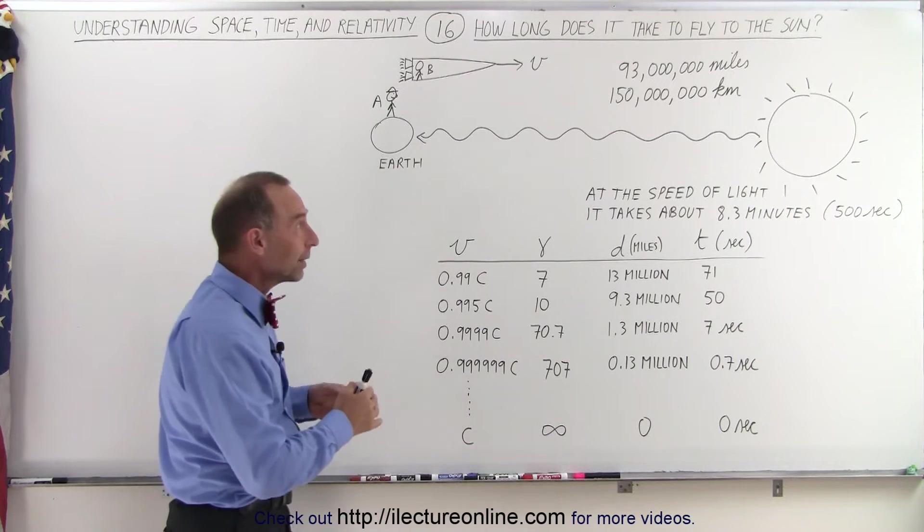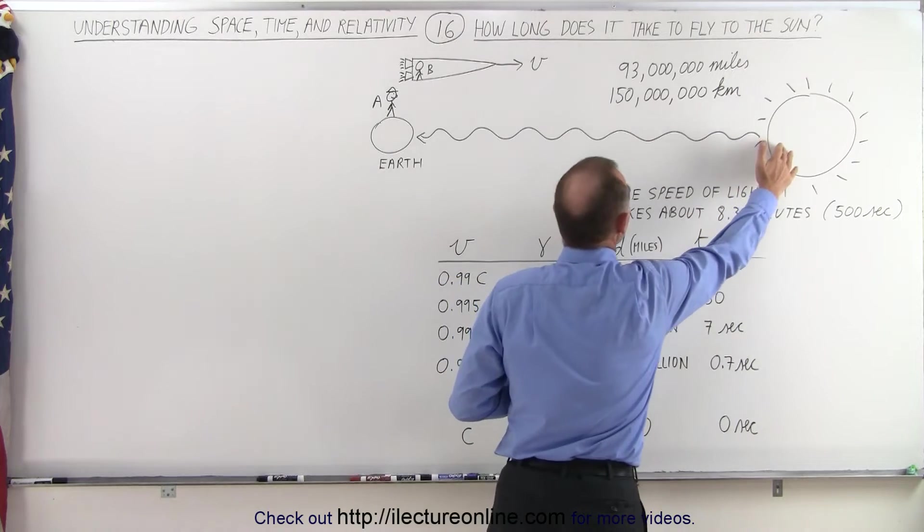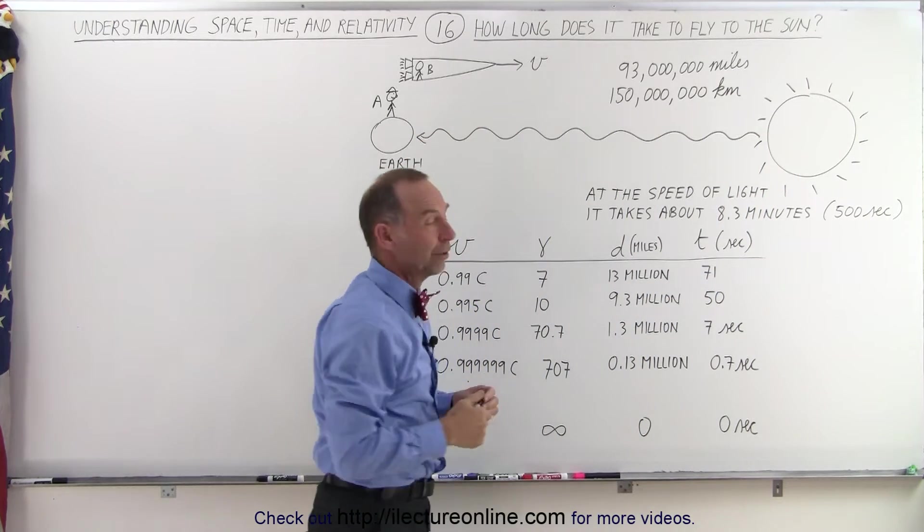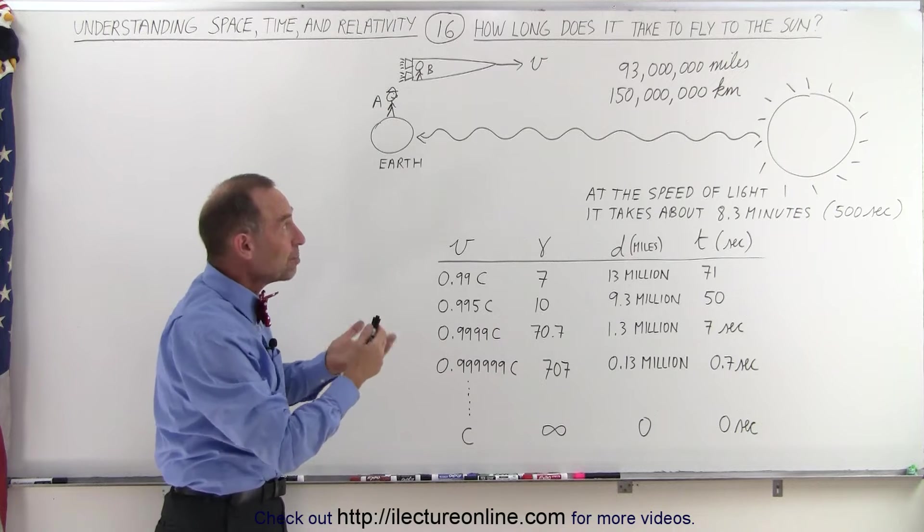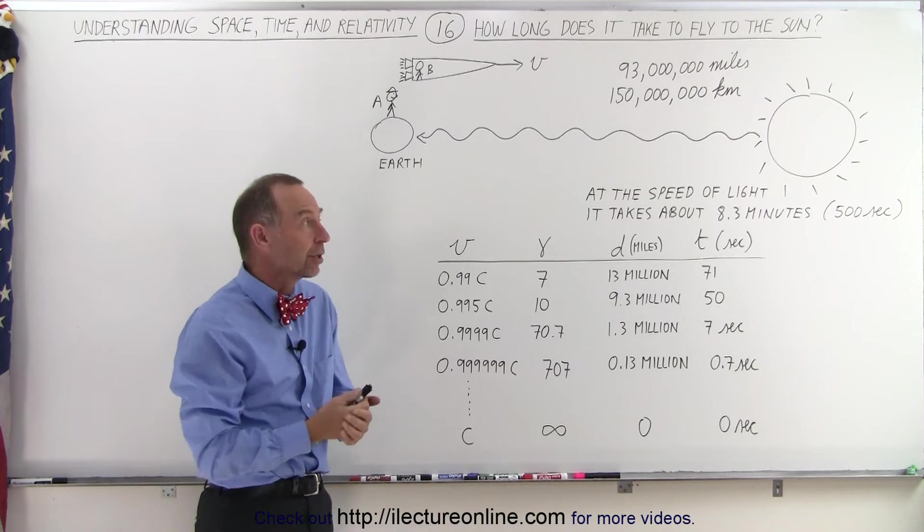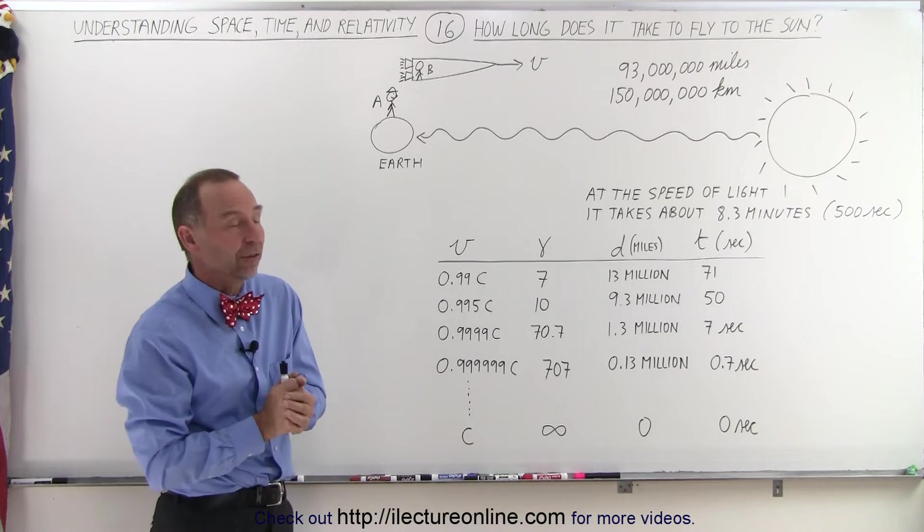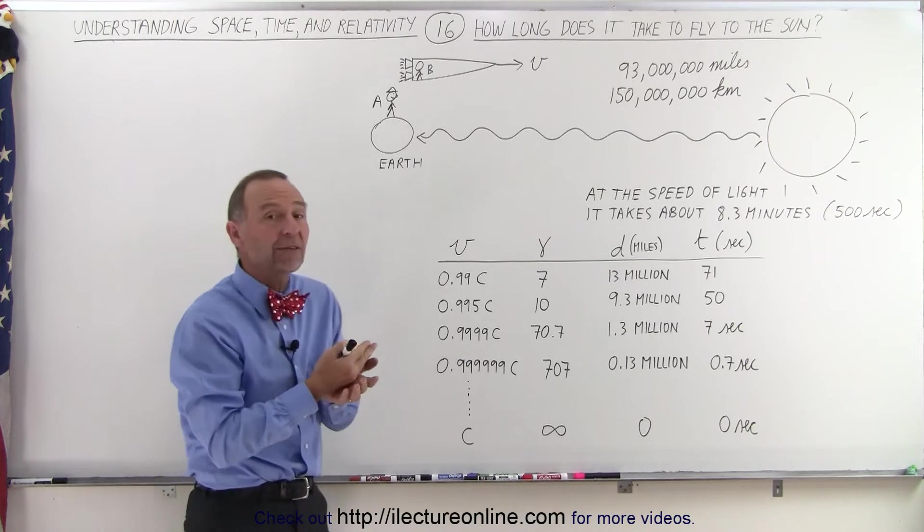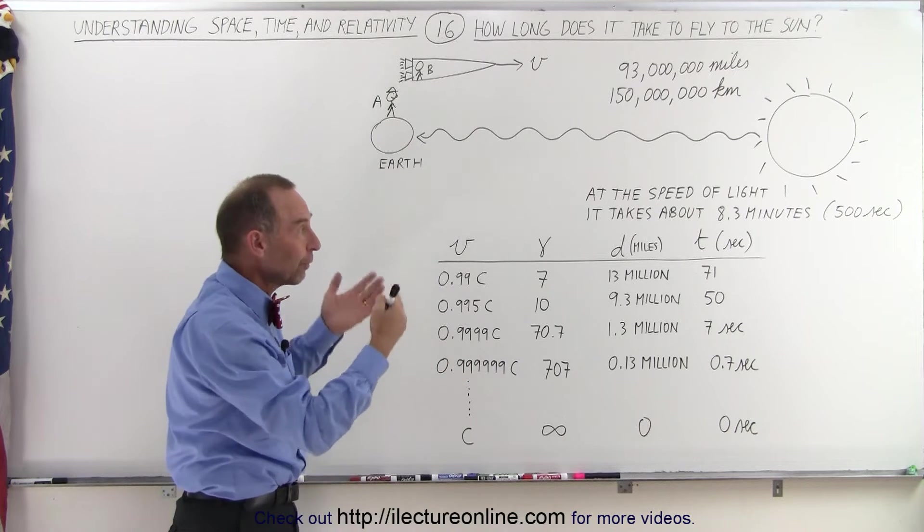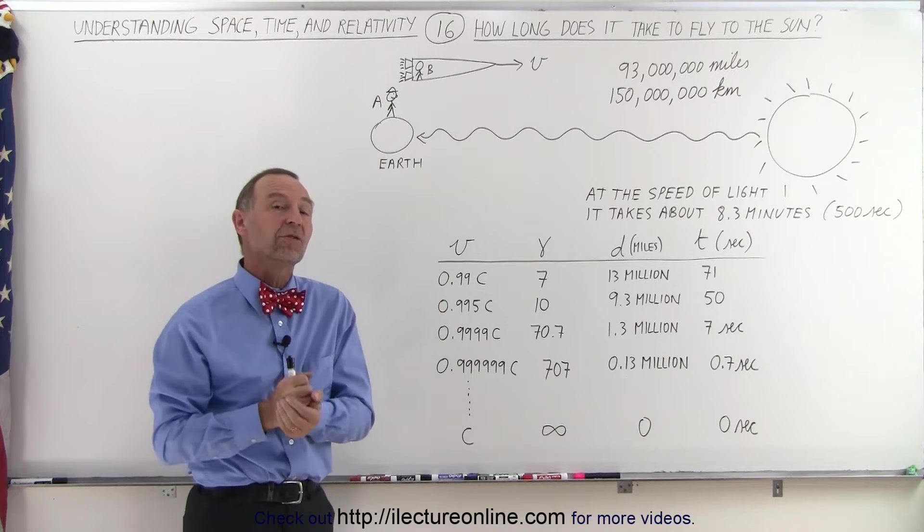Well, we know that the light coming from the Sun takes a little bit more than eight minutes to reach the Earth. And that's 93 million miles or about 150 million kilometers. 8.3 minutes is about 500 seconds. And so you'd say that if you could travel at the speed of light, it would take you a little over eight minutes, about 500 seconds to reach the Sun.